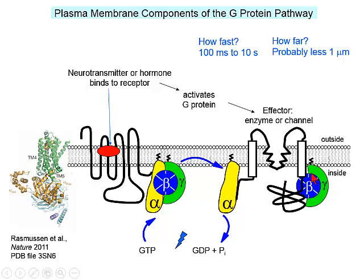One micrometer is indeed larger than most conformational changes. Nathan Daskal showed data about G-proteins activating potassium channels: in some cases the G-protein and the potassium channel pre-exist in a complex, so the motions are rather small, but in other cases the G-protein needs to diffuse within the plane of the membrane to find the channel.